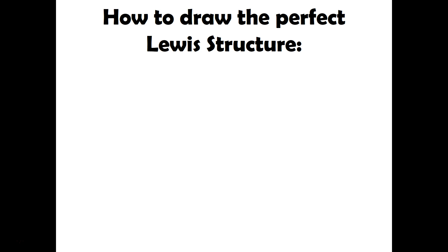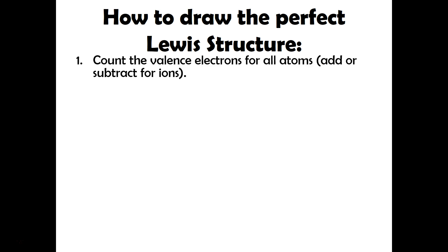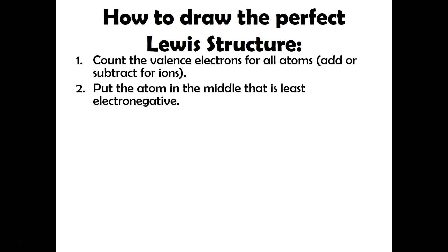So let's talk about how to draw the perfect Lewis structure. There are a few steps. The first one is you want to count the valence electrons for all atoms involved. If you have an ion, remember you're going to want to add or subtract that number of electrons. Then you'll want to put the atom in the middle that is the least electronegative — that's why I reviewed the electronegativity trend before.